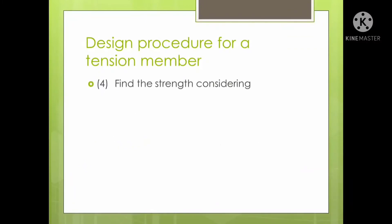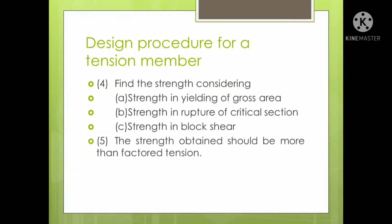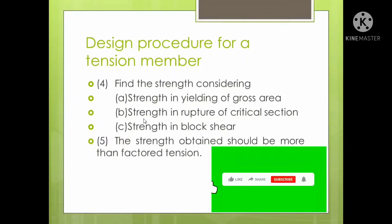The next step is finding the strength considering: strength in yielding of gross area, strength in rupture of the critical section, and strength in block shear. The equations for all three were covered in the preliminary slides. The fifth step is a check: the strength obtained — the minimum of A, B, and C — should be more than the factored tension Tu.